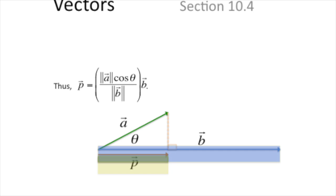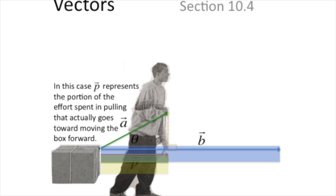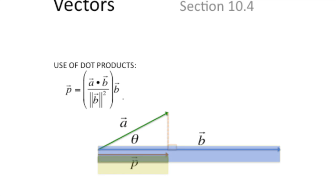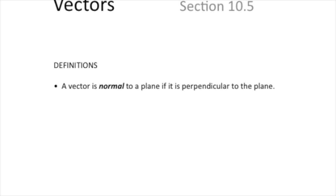P represents the portion of the effort spent pulling that actually goes toward moving the box forward. By the way, if you were using dot products, you could use dot products to get this as well. You can express the magnitude of P by getting the dot product of A and B and dividing it by the magnitude squared of B.